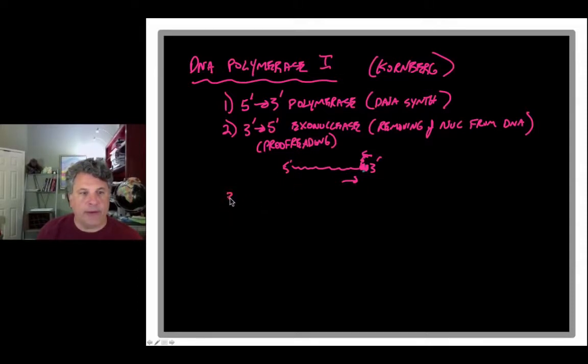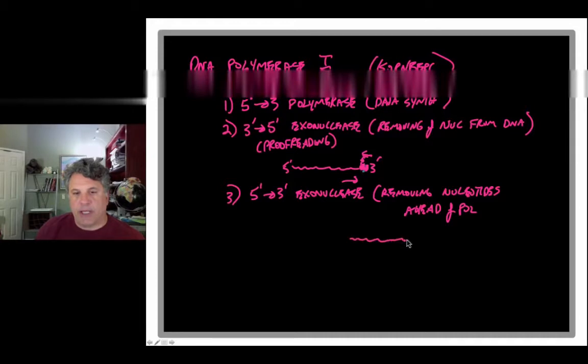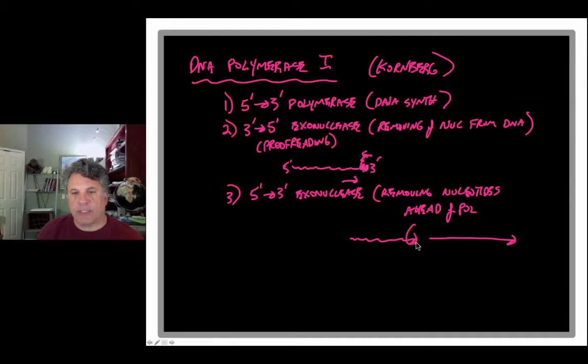And then finally we have another enzymatic activity that is a 5' to 3' exonuclease activity. And you may remember from introductory biology that this exonuclease activity is involved in removing nucleotides ahead of the polymerase. That is, if you have a DNA chain like this and another DNA chain like this with a gap in them, a polymerase molecule will be synthesizing DNA in the 5' to 3' direction. And if it engages another strand ahead of it, it will remove nucleotides, it will chop them off in the 5' to 3' direction. And we will study this when we talk about the details of DNA replication and Okazaki fragments.